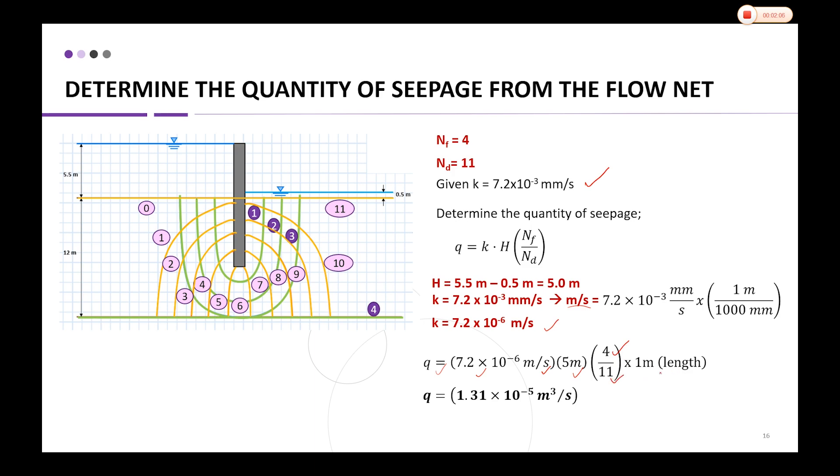We multiply by 1 meter length because we have a line of sheet pile, which is the length. So we get q = 1.3×10⁻⁵ m³/s. The cubic meter unit comes from the meter length of the line of sheet pile. It's not necessarily one meter, but we need the per-length unit so the final unit becomes cubic meters per second.